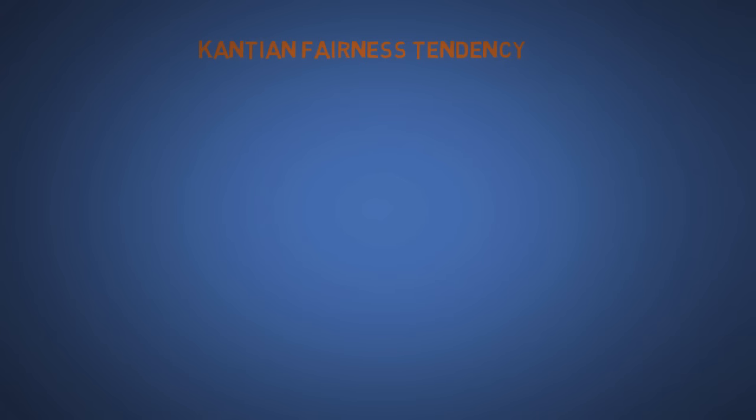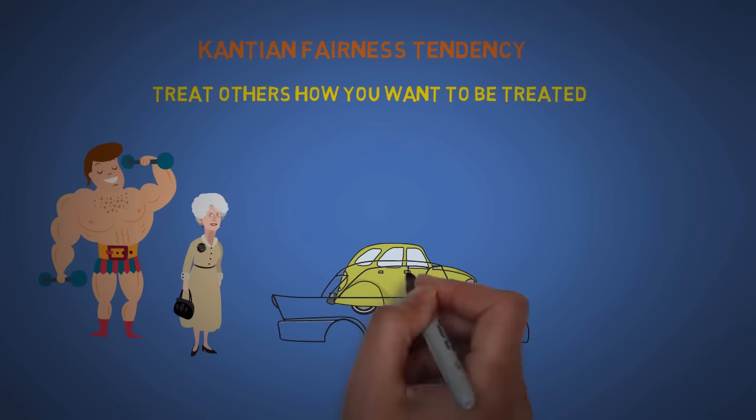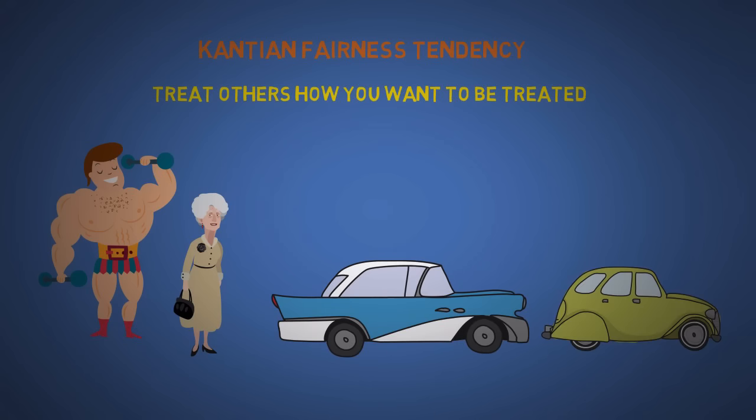The seventh is Kantian fairness tendency, which is pretty much the golden rule. That is to treat others how you want to be treated. It's the bias that makes a 300 pound big guy willing to line up behind an old lady and follow the first come first serve rule. Another example is letting in other drivers on the freeway believing that they will reciprocate in the future. So think about situations where you get mad at strangers for not sharing who don't even owe you anything.